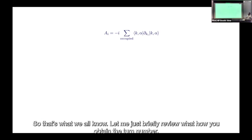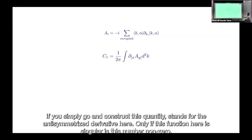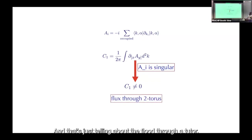To briefly review how you obtain the Chern number: construct all the eigenstates and take the antisymmetrized derivative to find the Berry connection A_i. You're looking for a discontinuity across the Brillouin zone. This quantity is non-zero only when the wavefunction is singular, telling you about the flux through a two-torus.